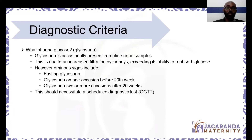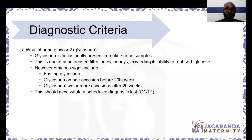What about glucose in the urine, or glycosuria? Occasionally in the antenatal clinic we see glucose in patient urine samples. Why might glucose appear in the urine during pregnancy? Because of an increased filtration by the kidneys of glucose. Usually, when someone is not pregnant, the kidneys are able to reabsorb all the glucose. In pregnancy, the filtration capacity exceeds the reabsorption capacity, and sometimes glucose is present in the urine. So it's not always indicative of a problem.